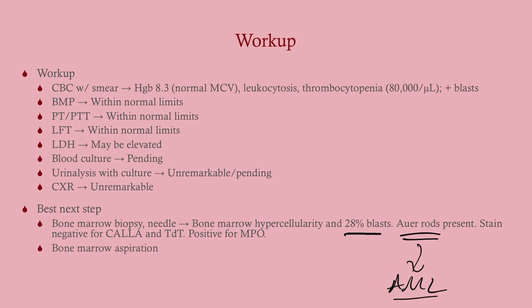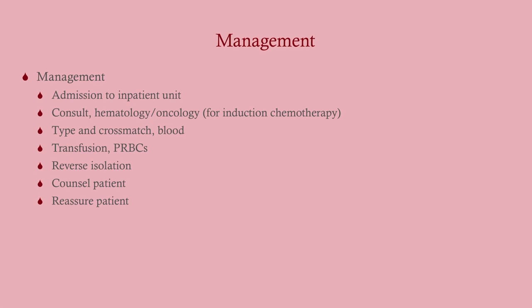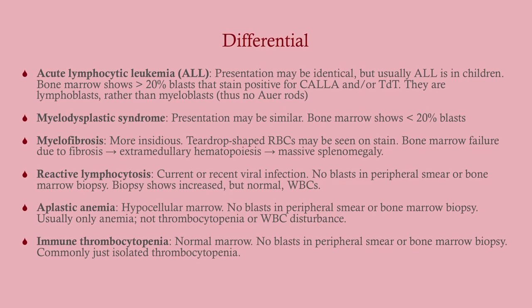Auer rods are present, confirming AML. CALLA and TdT are negative; MPO (myeloperoxidase — also known as p-ANCA, which we look for in certain autoimmune disorders) is positive. Management: admit the patient, consult hematology/oncology, transfuse due to severe anemia, implement reverse isolation to prevent infection, and counsel and reassure. On CCS, you will not be expected to start cancer medications.